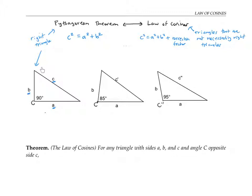For this first triangle on the left, the angle that's opposite to side c is exactly a right angle. But in this next triangle, the angle opposite to side c prime is a little bit less than a right angle. So we expect the side length c prime should be a little bit shorter than the side length c in the previous triangle that had the same side lengths a and b for its legs.